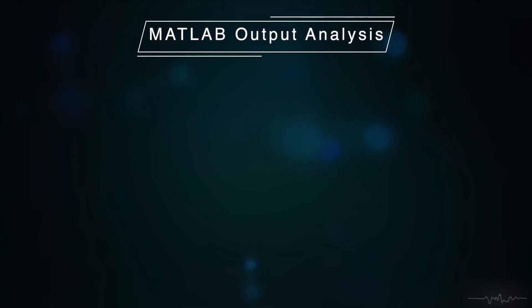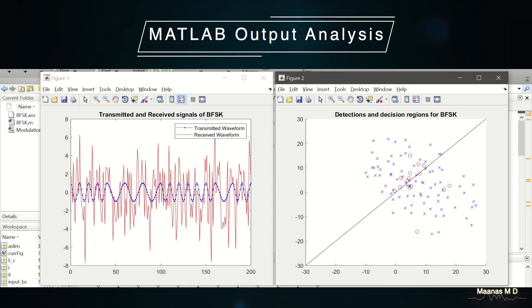Now let us interpret the outputs. In figure one we can see there are two waveforms present. One is in the blue line and one is in the red line. The blue line represents a BFSK signal in a noiseless channel or at the transmitter end.